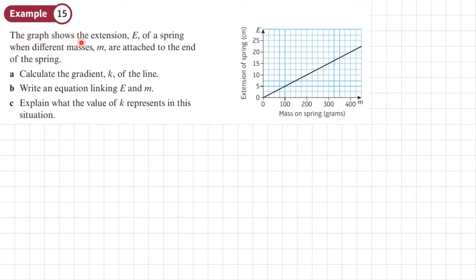Example 15, the graph shows the extension e of a spring when different masses m are attached to the end of the spring. In part a, we want to calculate the gradient k of the line.